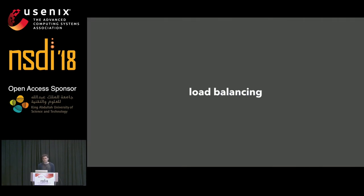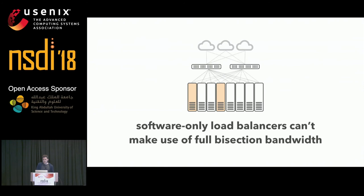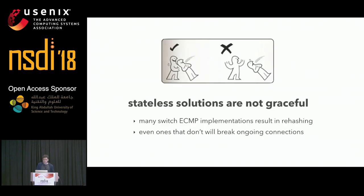For load balancing within this architecture, one whole set of solutions to discard is anything that keeps state — including load balancer appliances and literature from the cloud computing space like Ananta, DoIt, Maglev, and Silk Road. Software-only load balancers can't make full use of the bisection bandwidth given our topology and physical constraints. Stateless solutions like switch ECMP are not graceful: many implementations rehash every time you change the routing table, and even those that don't will break transport protocols and reset ongoing connections.